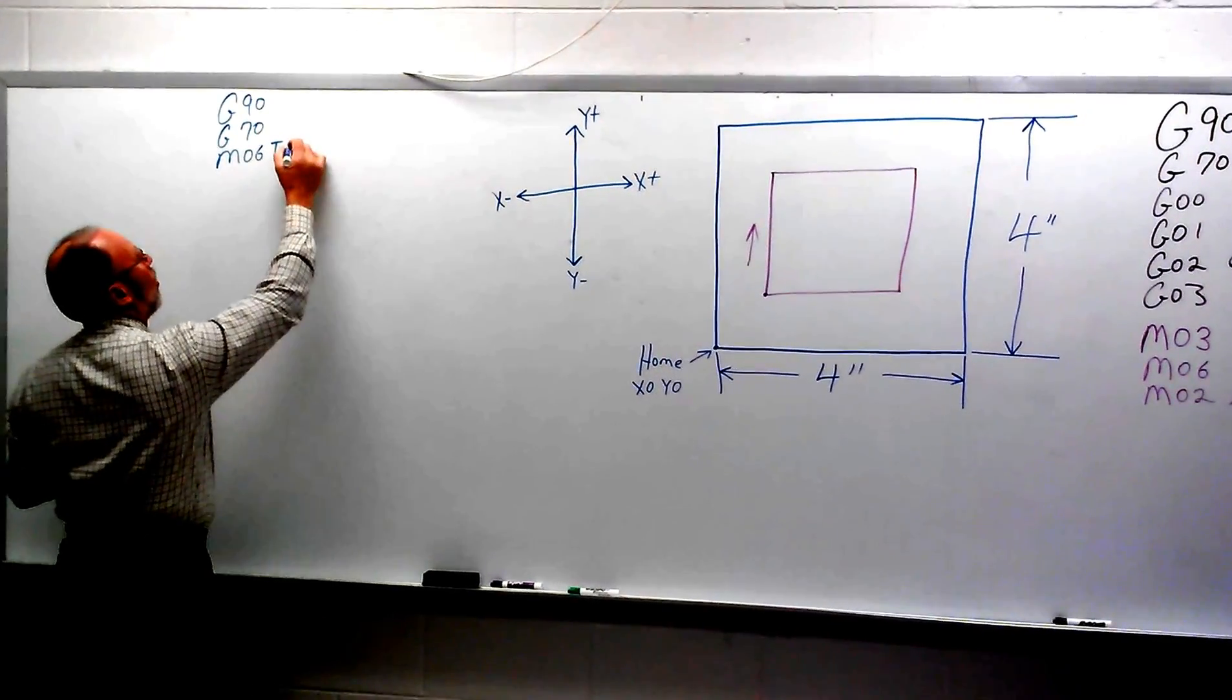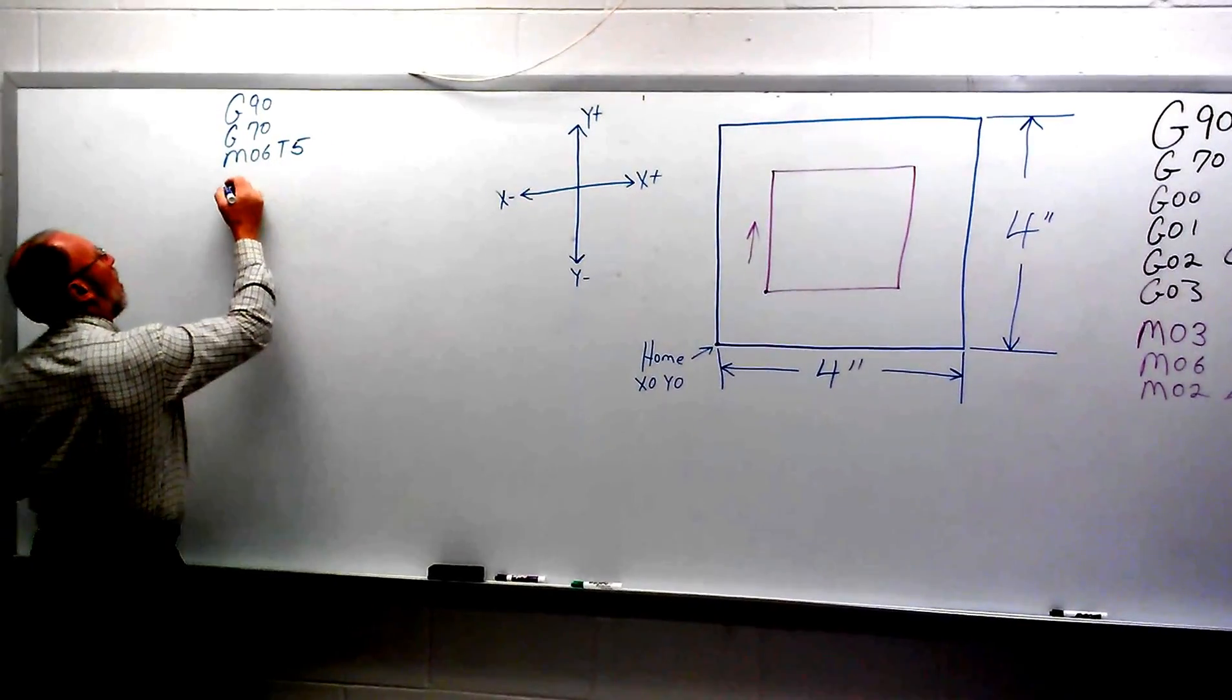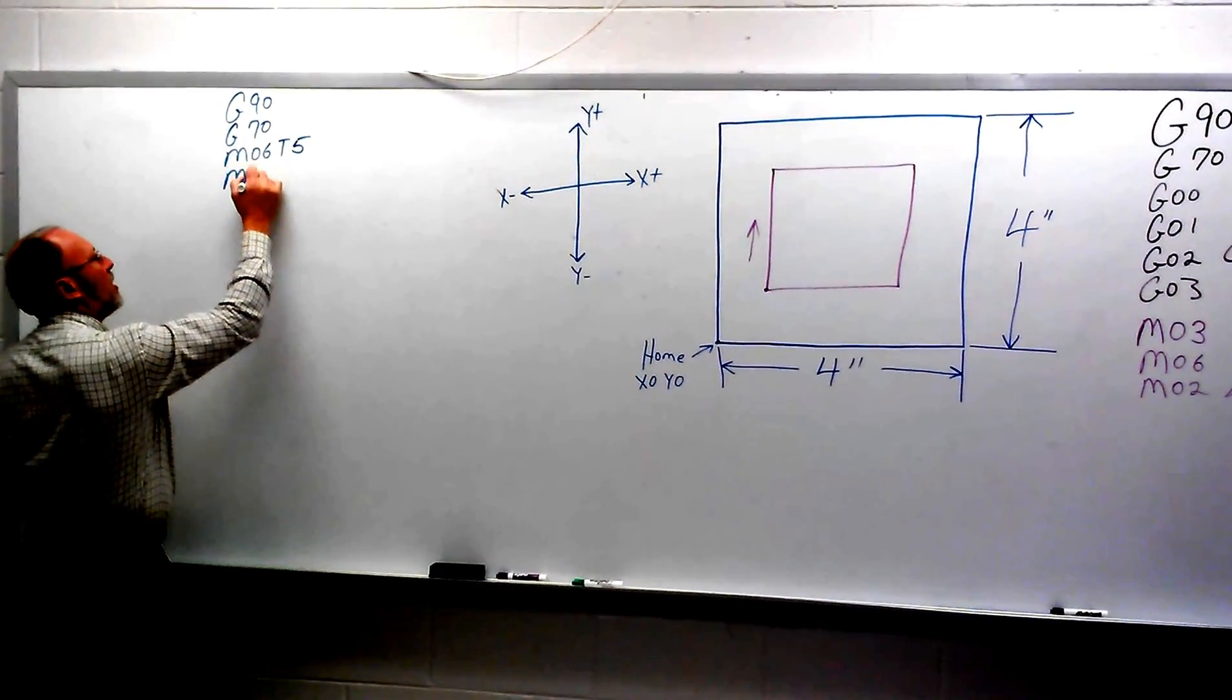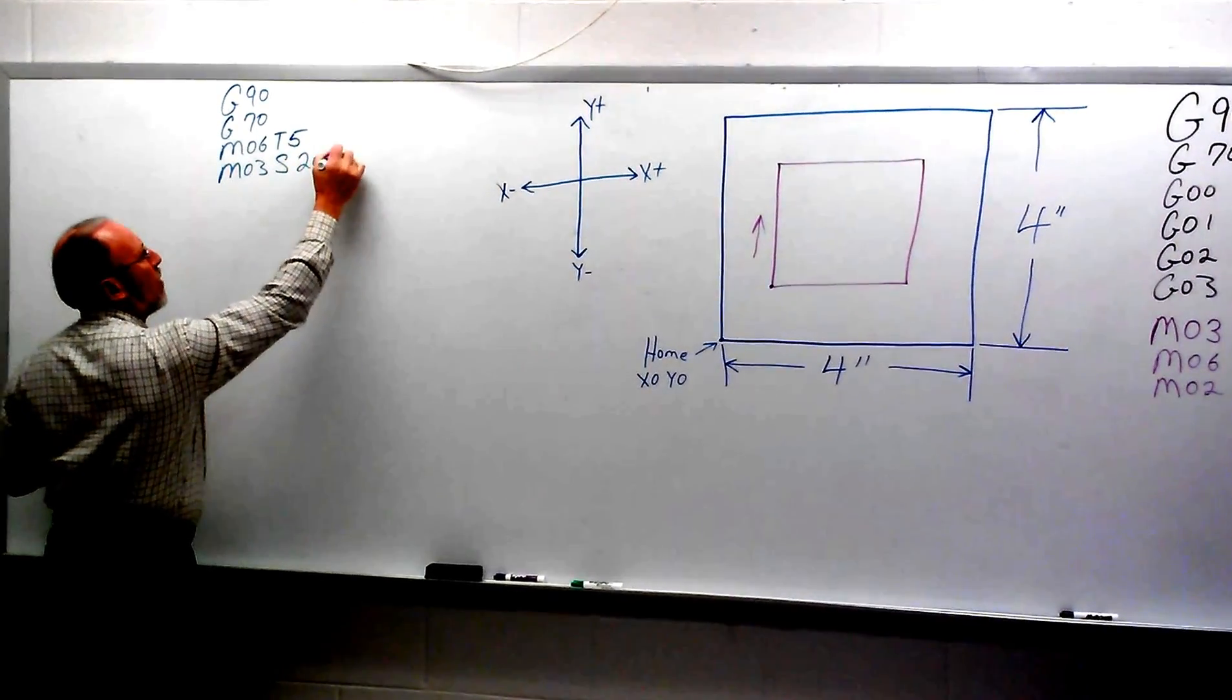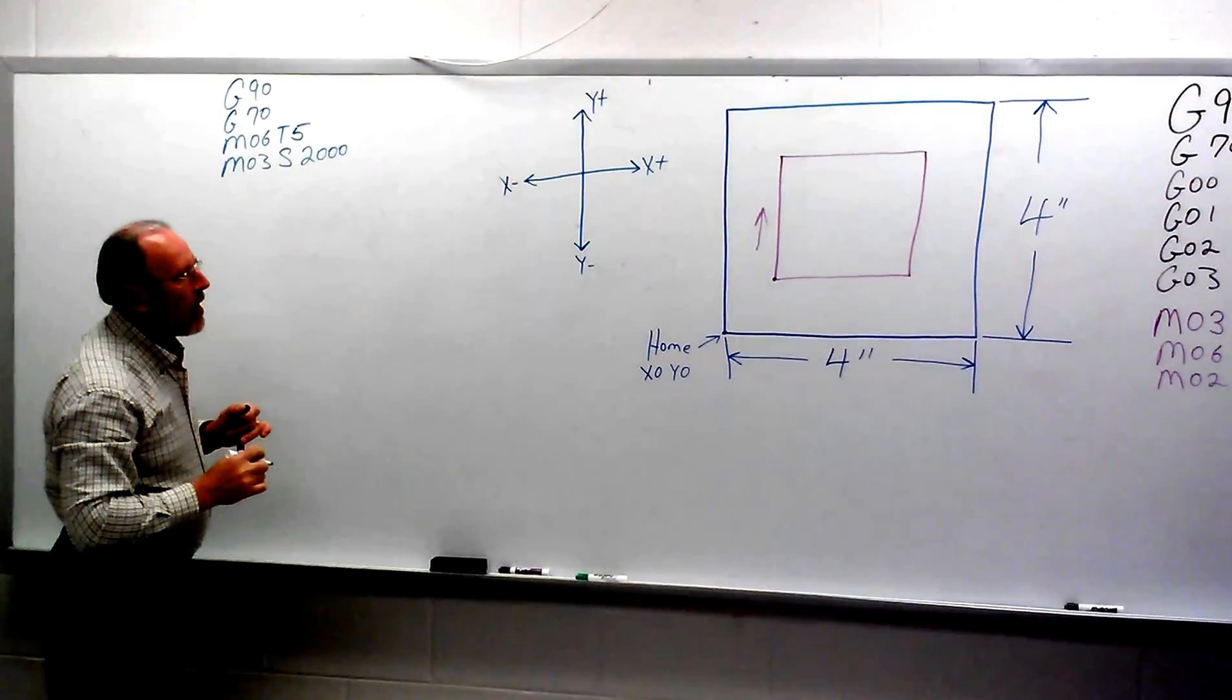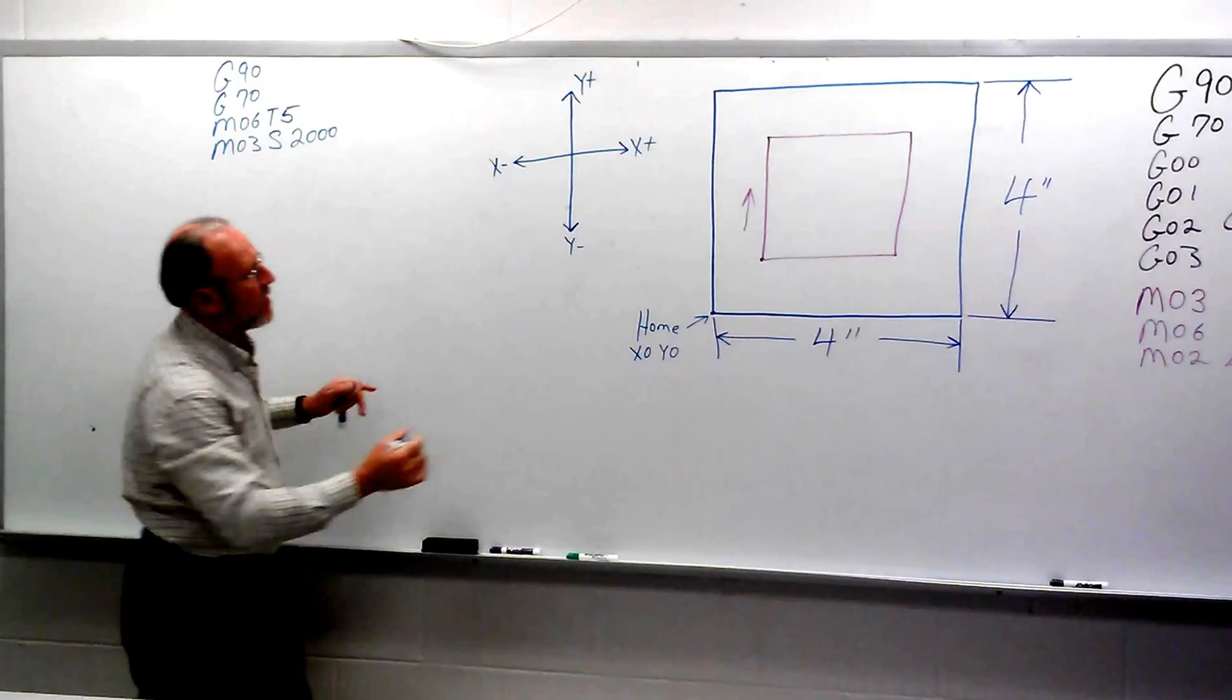We're going to turn the spindle on with M03, S for speed, maybe about 2,000 revolutions per minute. Now, we can go ahead and position ourselves at the bottom of this corner.